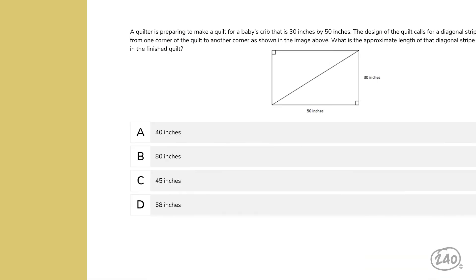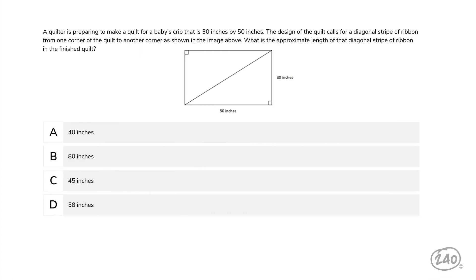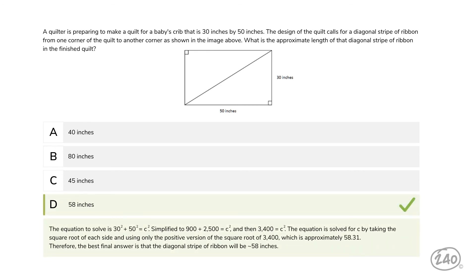Geometry is up next. A quilter is preparing to make a quilt for a baby's crib that is 30 inches by 50 inches. The design calls for a diagonal stripe of ribbon from one corner of the quilt to another corner. What is the approximate length of that diagonal stripe of ribbon in the finished quilt? While this looks like a rectangle, once we add that ribbon down the center, we're really dealing with two triangles. We're given the two sides and asked to find the hypotenuse. We can use the Pythagorean theorem to get the answer of D, 58 inches.